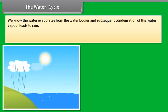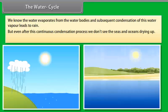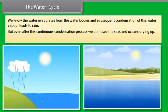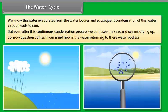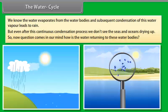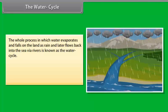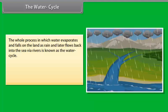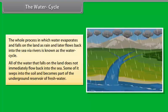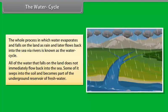The water cycle. We know the water evaporates from the water bodies and subsequent condensation of this water vapor leads to rain. But even after this continuous condensation process we don't see the seas and oceans dry up. So, now question comes in our mind, how is the water returning to these water bodies? The answer to above question is that the whole process in which water evaporates and falls on the land as rain and later flows back into the sea via rivers is known as the water cycle. All of the water that falls on the land does not immediately flow back into the sea.